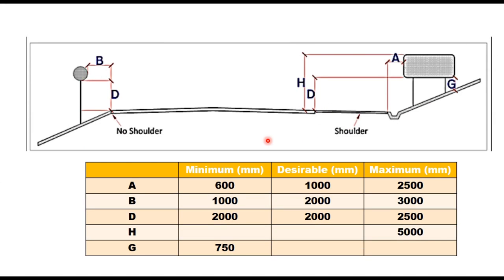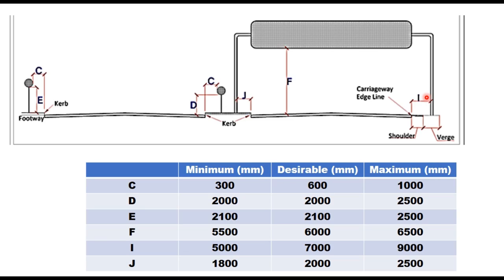On all roads with or without curb and with and without shoulder, the extreme edge of the ground mounted sign should be at least 600 mm — distance A — and can be up to 2.5 meter away from the shoulder edge. If there is no shoulder, then this distance should be minimum 1 meter and maximum 3 meter, desirable 2000 mm. The clear height of the sign above the ground should be 2 meter to 2.5 meter, preferably 2 meter. For roads with curb, distance C will not be less than 300 mm. The distance of the sign from the pavement edge should be minimum 300 millimeter and maximum 1000 millimeter, desirable 600 millimeter.